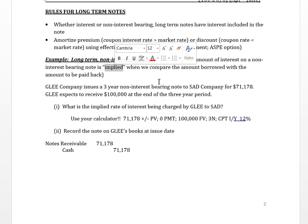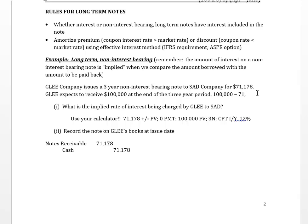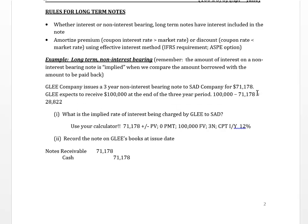Let's look at a long-term non-interest bearing note example. Glee issues a three-year non-interest bearing note to SAD for $71,178. At the end of three years, Glee expects to receive $100,000 back. That means over a three-year period, Glee will take in $28,822 in interest revenue — not in any one year, but spread over three years.